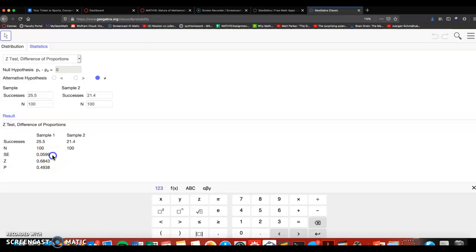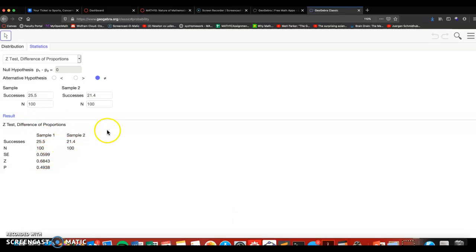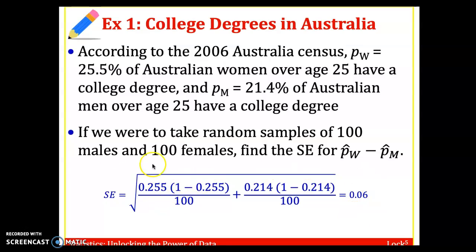For right now, what this calculator does is throws in that formula that I just showed on the slides and puts in the proportions and sample sizes to get our standard error, 0.0599. Just another approach to get this. I expect you to be able to calculate standard error, whether it's with this formula or with software.